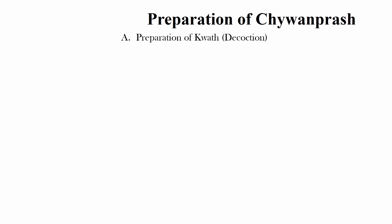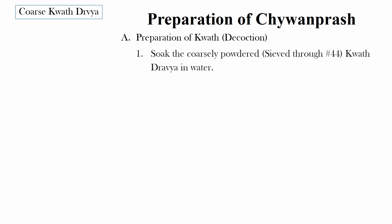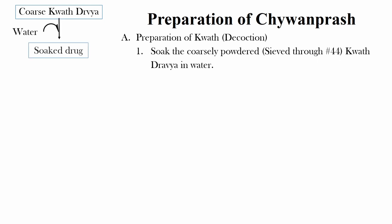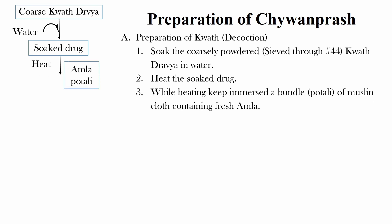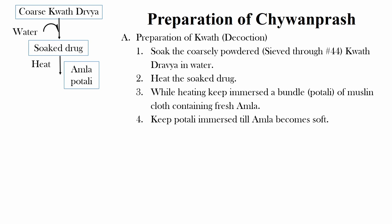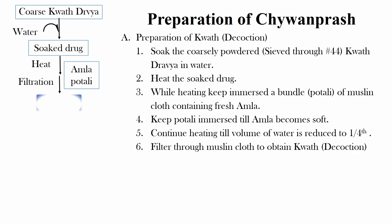Now coming to the preparation of Chyawanprash. The first step is preparation of Kwatha Dravya. Soak the coarsely powdered Kwatha Dravya in water. Heat the soaked dravya. While heating, keep immersed a bundle i.e. potli of muslin cloth containing fresh Amla. Keep the potli immersed till Amla becomes soft. Continue heating till the volume of water is reduced to one-fourth. Filter through muslin cloth to obtain Kwatha.